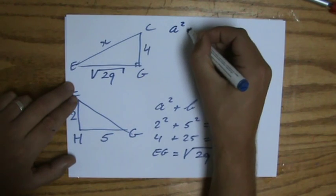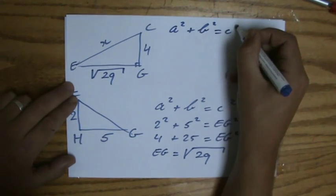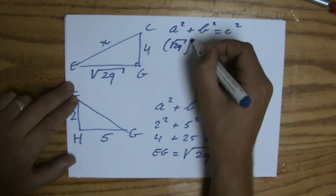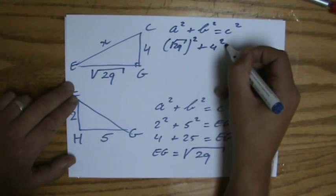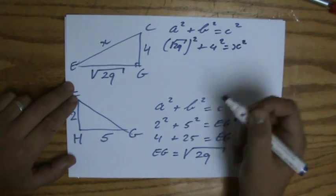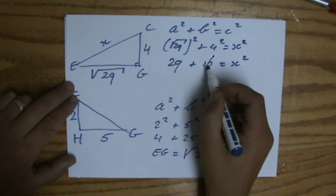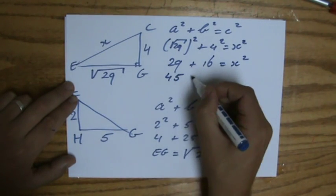Now to find the length of EC I do the same thing. A squared plus B squared equals C squared, so the square root of 29 squared plus 4 squared equals x squared. That is 29, that is 16, so that is going to be 45 if you add that.